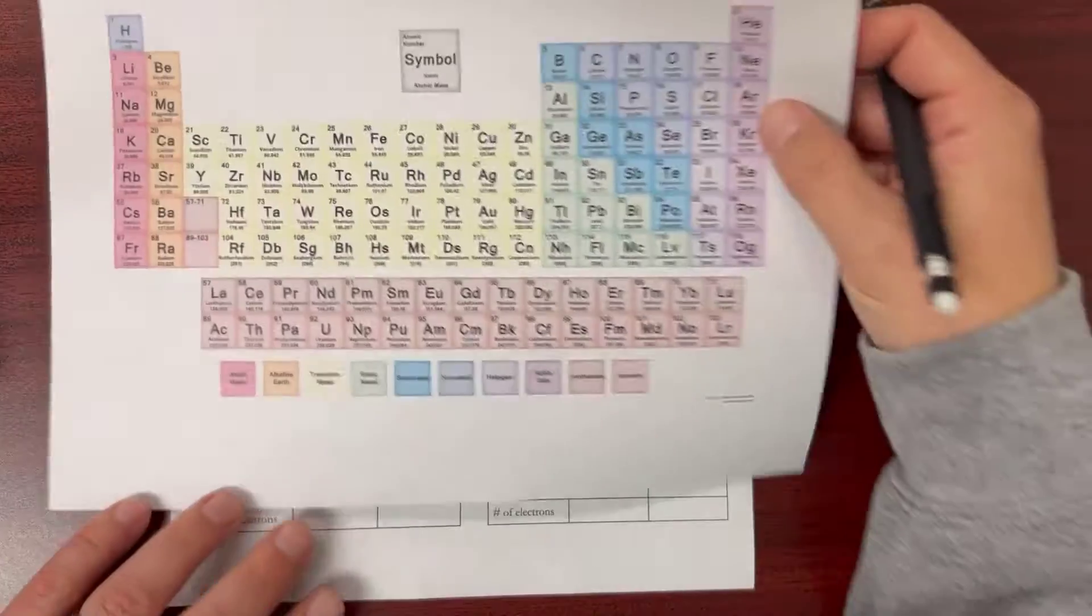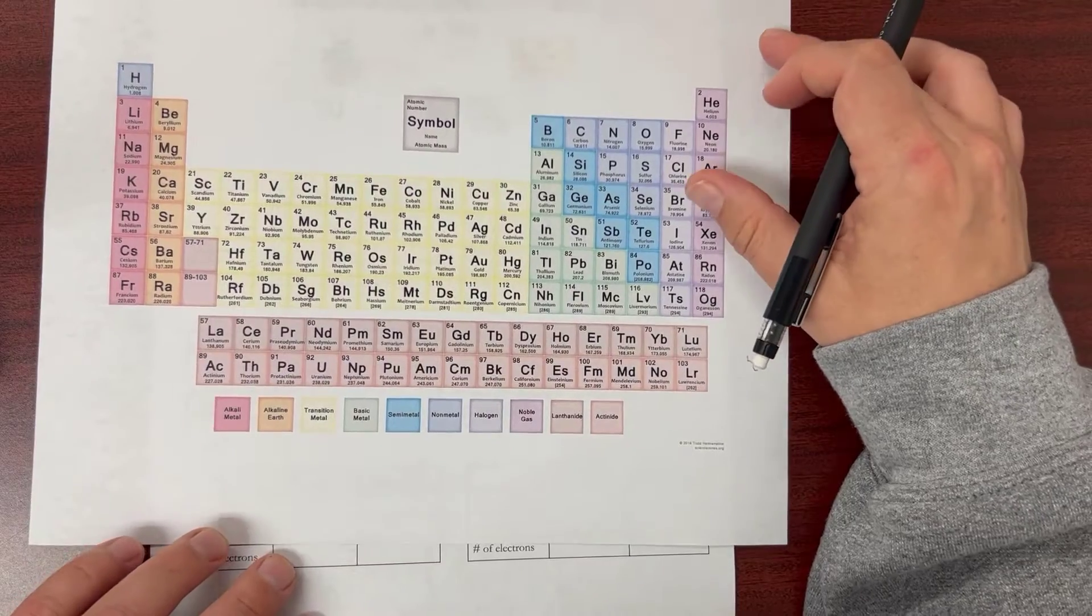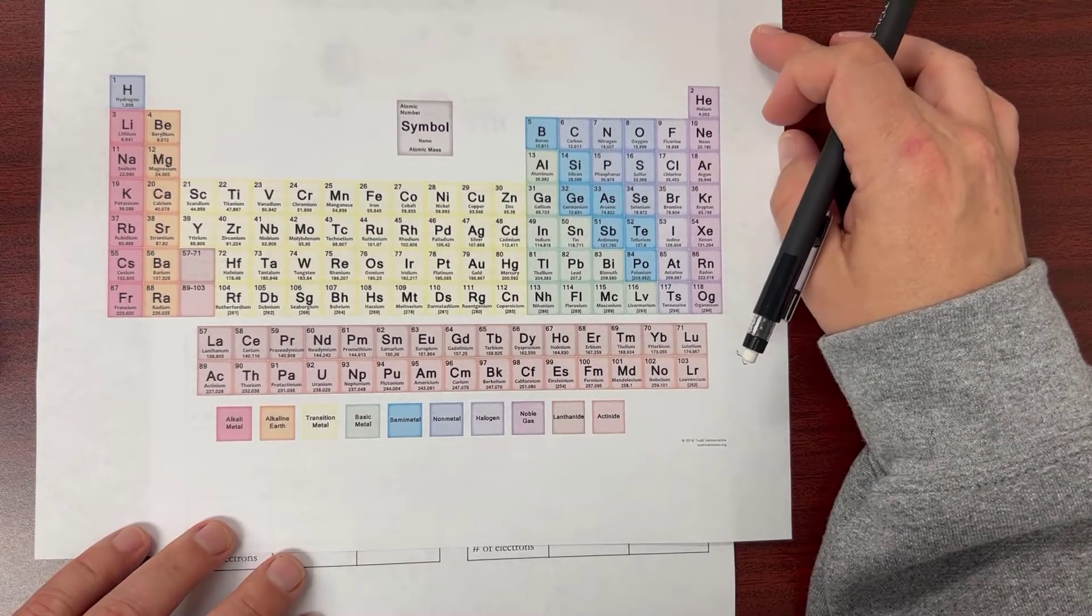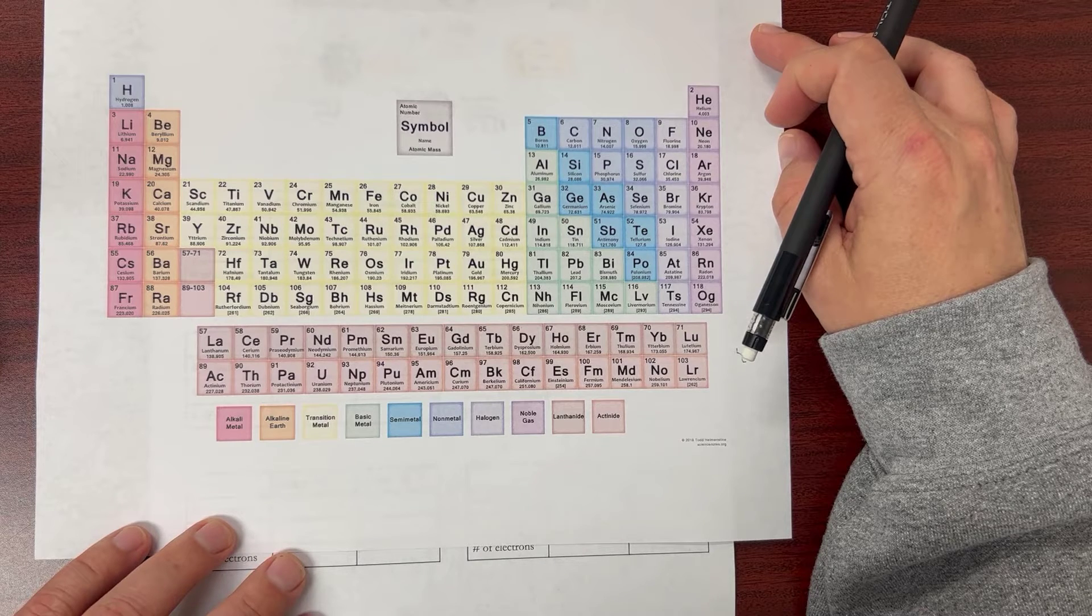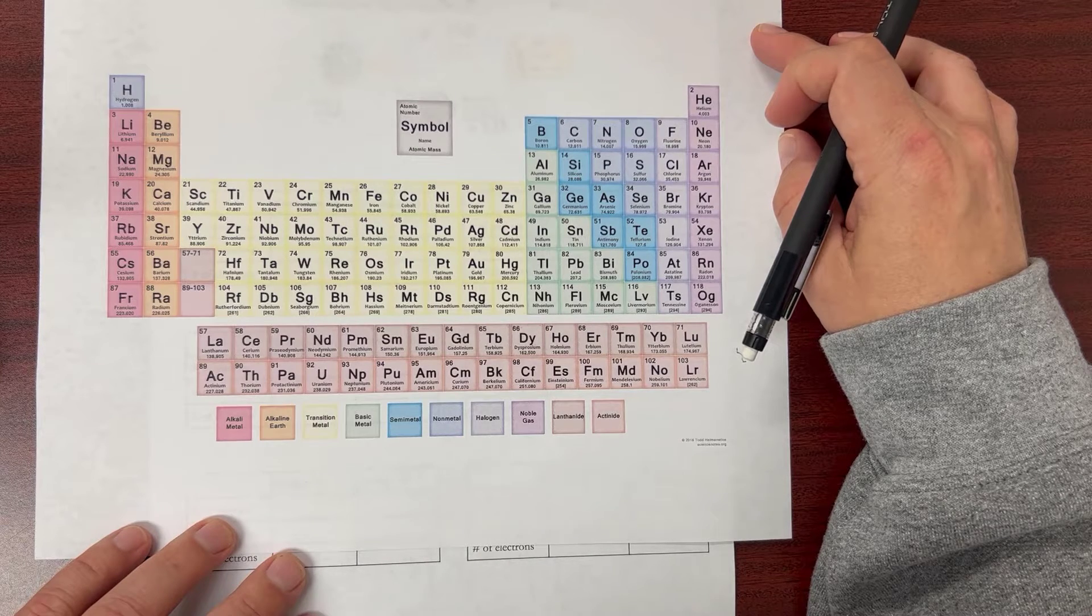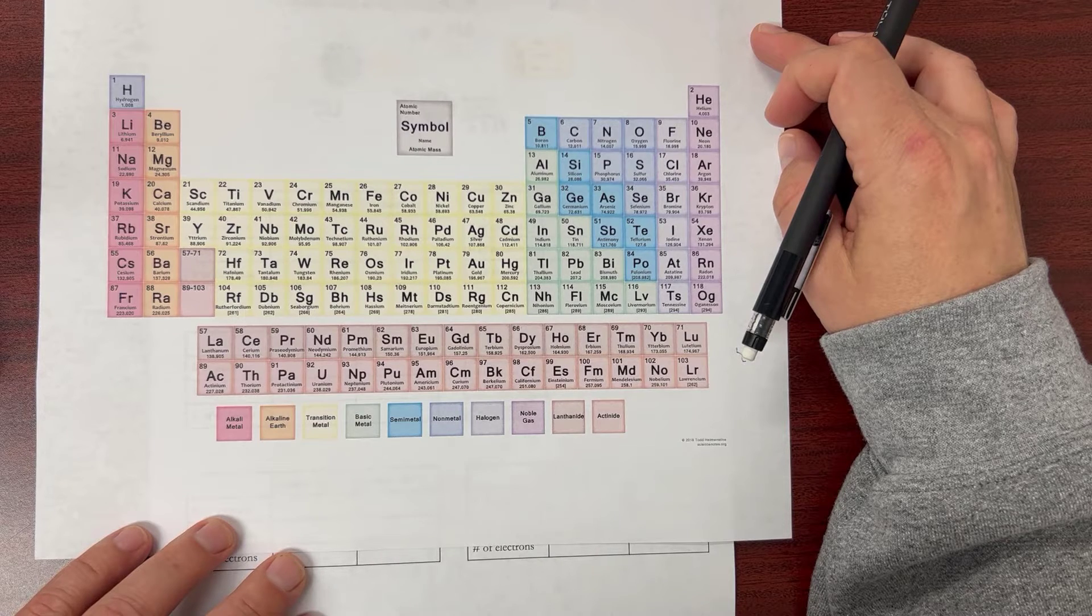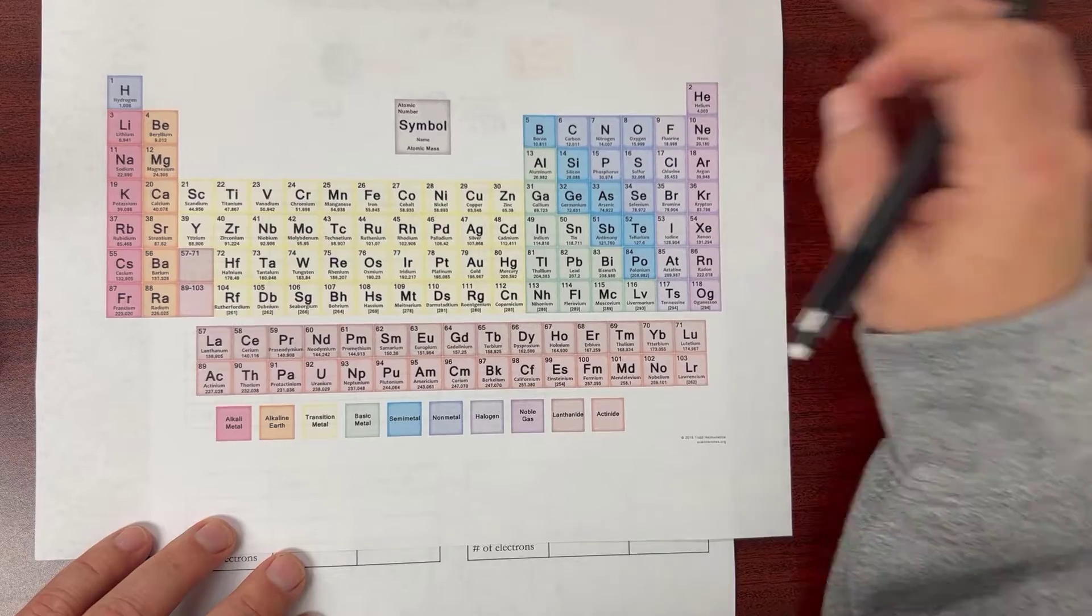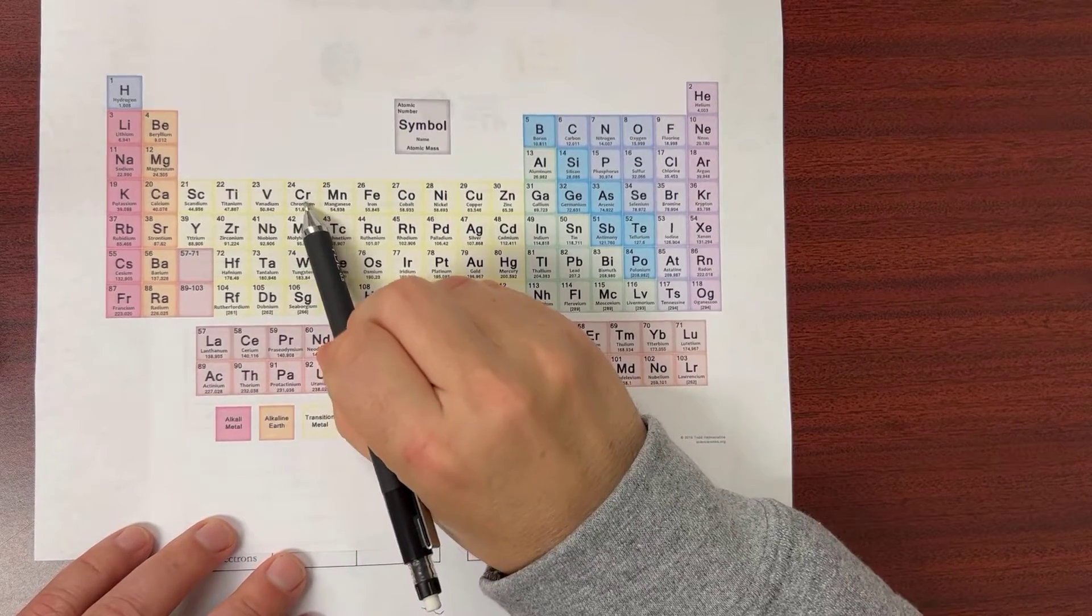Chromium-58: you're going to need a periodic table, so I've included one, but you can use really any periodic table. We need to find chromium first. I don't know offhand where chromium is... looks like it's right here at 24.